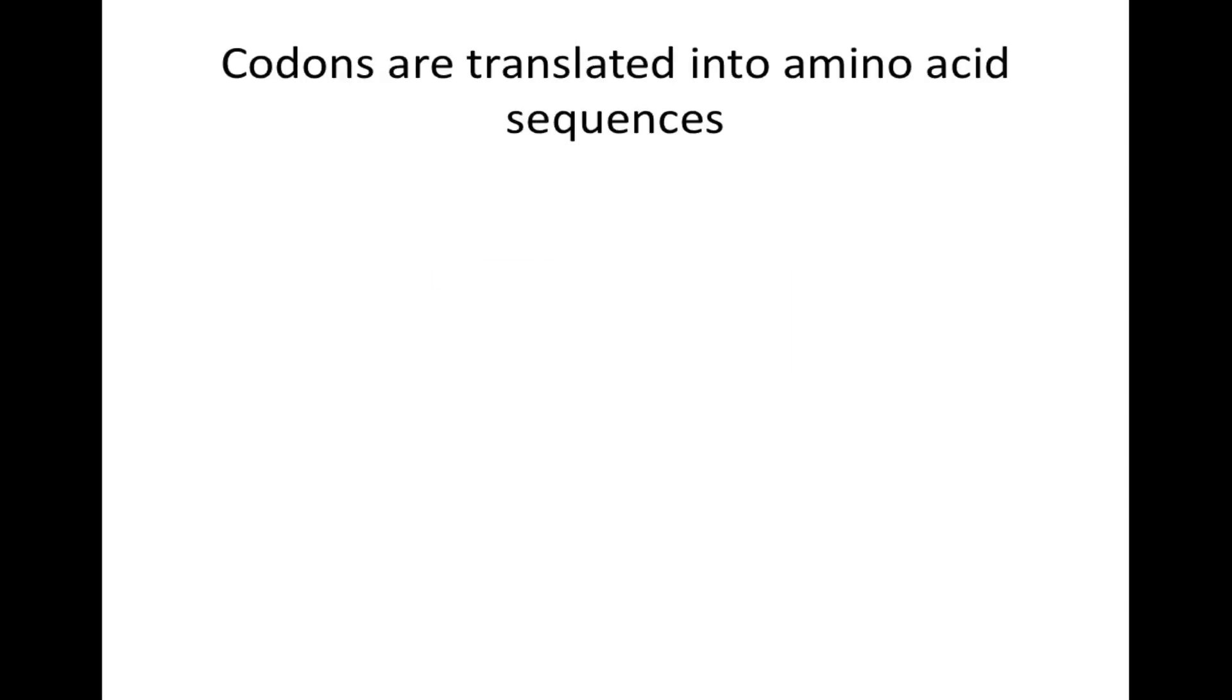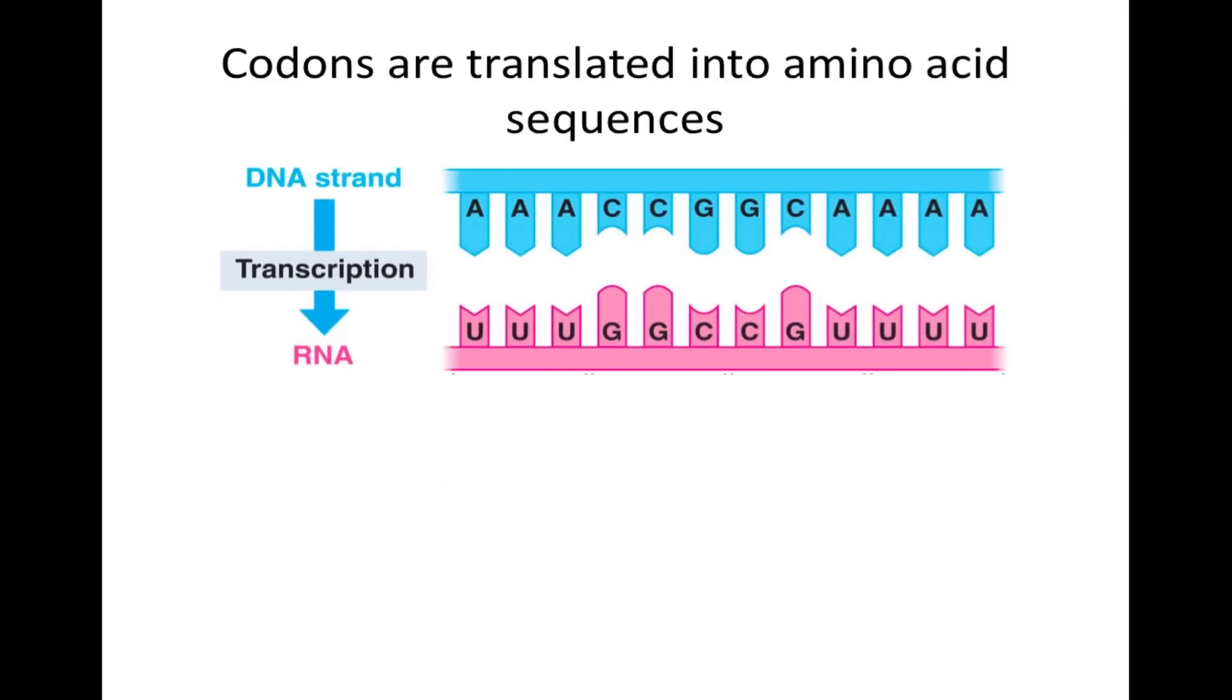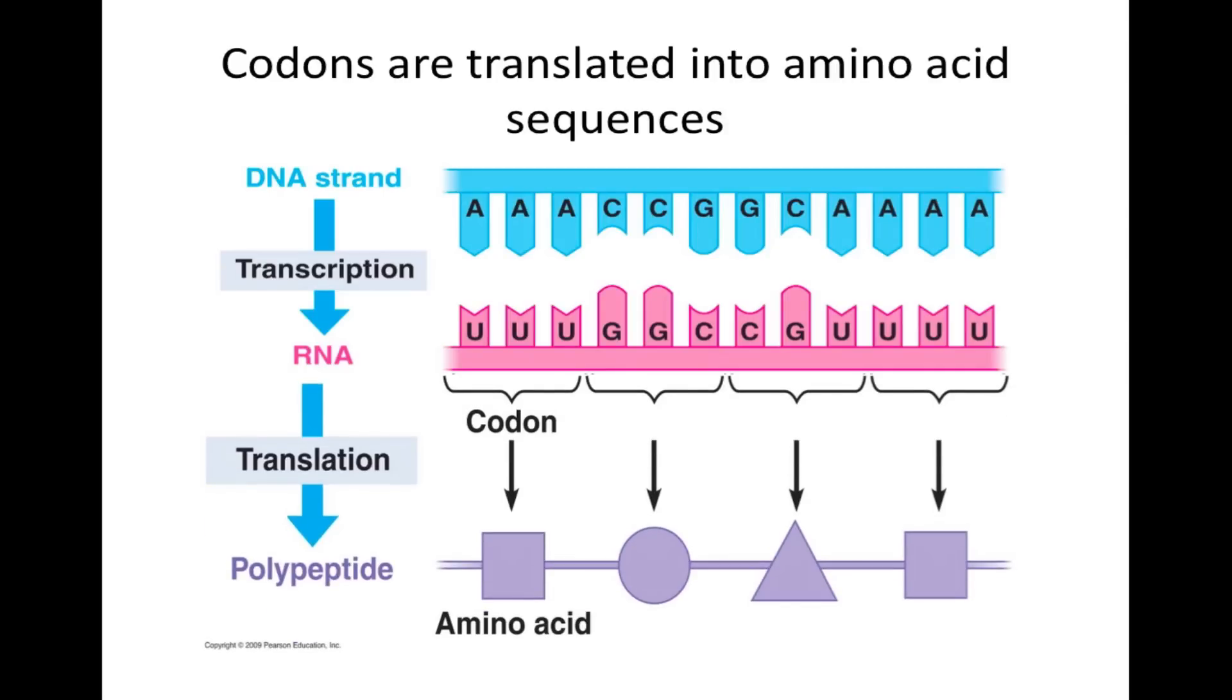Codons are translated into amino acid sequences. During transcription, a DNA strand is transcribed into RNA. The RNA is read as a series of three base words called codons. Each codon codes for a specific amino acid.